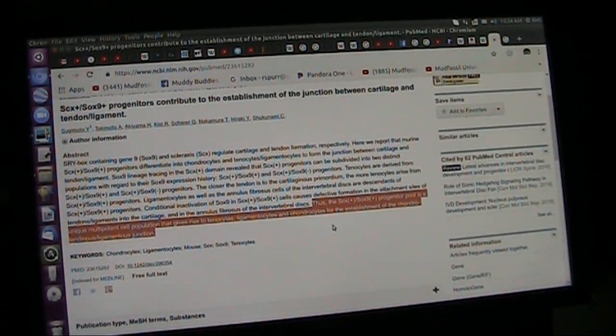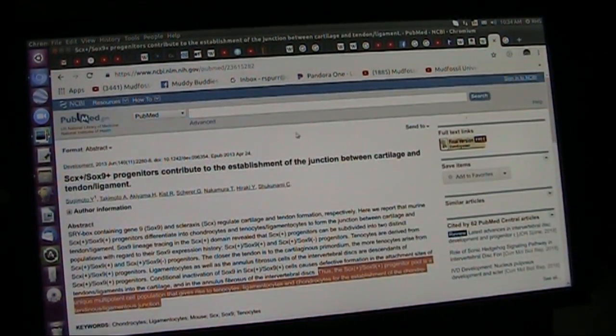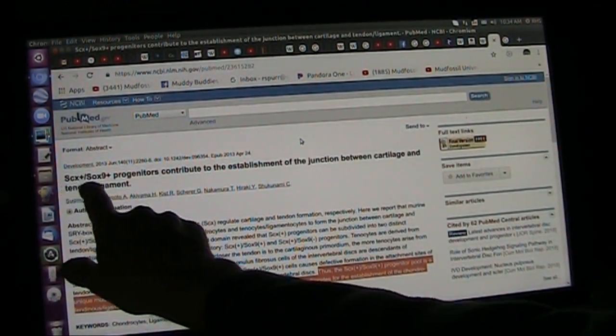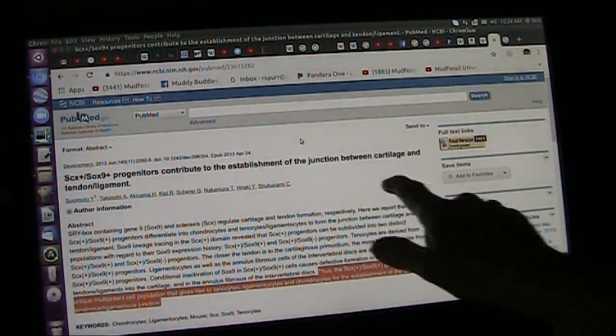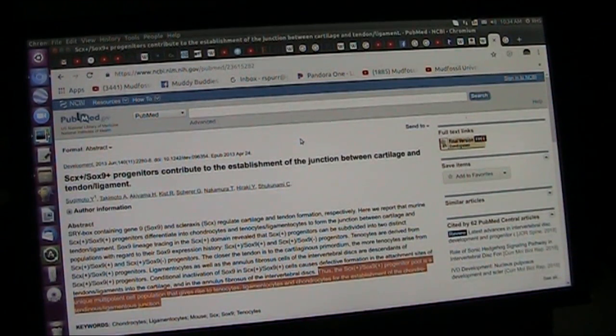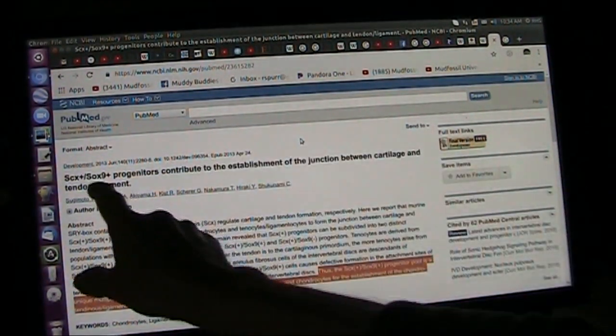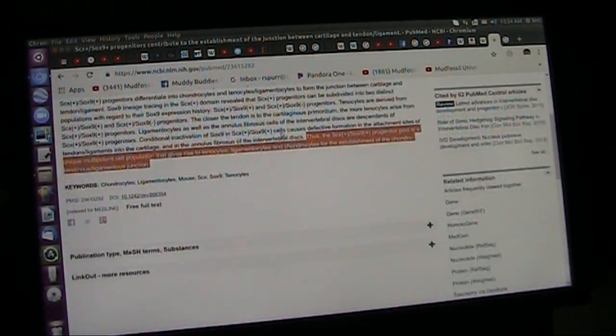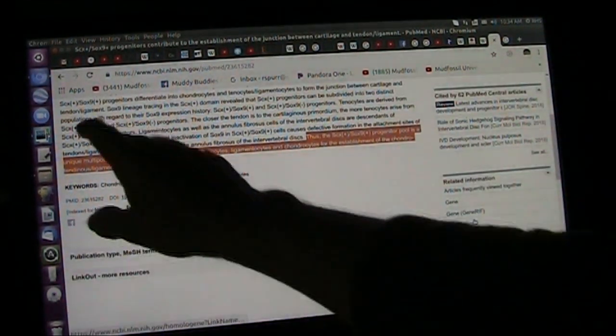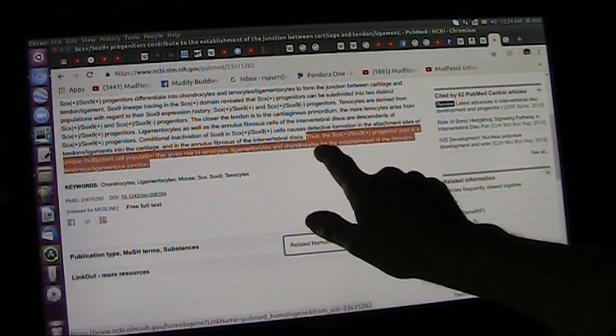All right. So I'm not going to bore you with this, but you saw that they don't really understand tendons. First of all, they don't. Now, there's these different SCX and SOX progenitors contribute to establishment of the junction between cartilage, tendon, and ligaments. What does that mean? Those different style emplacements do different jobs. This is all you have to do. It goes into a whole bunch of this and that, but you don't have to know any of that. What you do need to know is this.